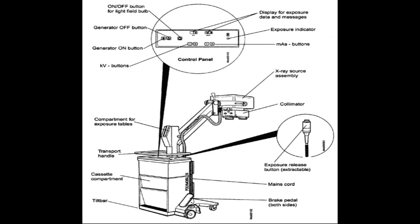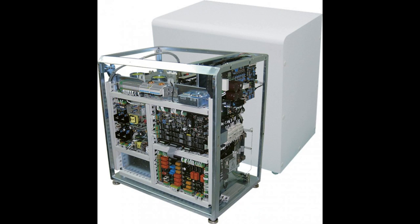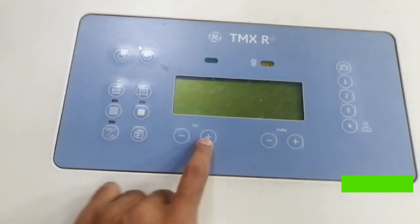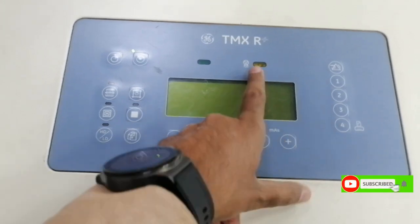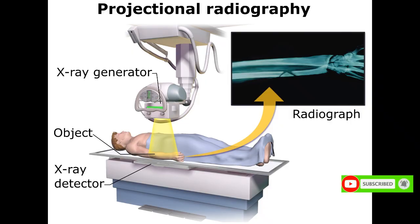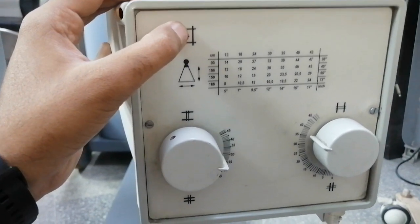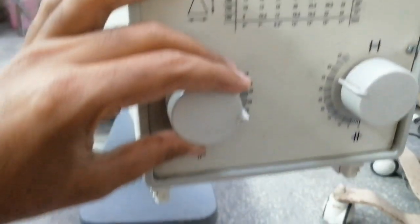Mobile X-ray machines typically consist of an X-ray generator, collimator, X-ray tube, support system, image receptor, and control console. The X-ray generator produces X-ray beams that pass through the patient's body and onto an image receptor. The collimator is used to control the size and shape of the X-ray beam, ensuring only the necessary area is exposed to radiation and reducing unnecessary radiation exposure to the patient and healthcare providers.